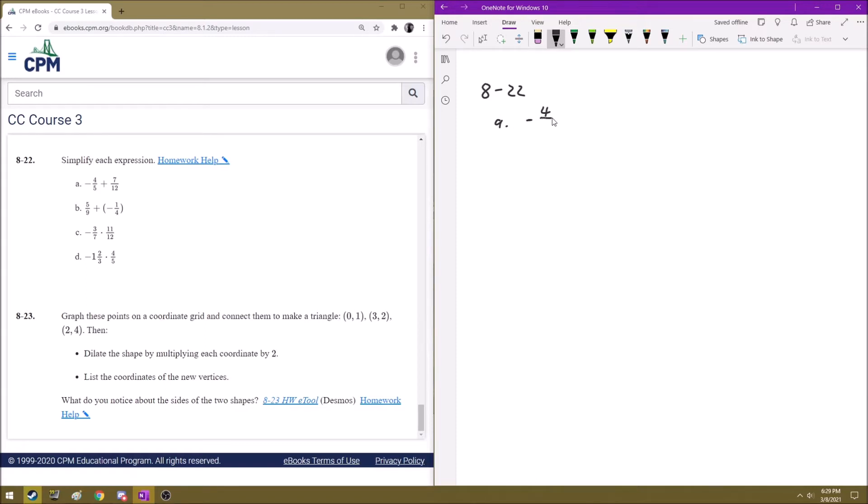So we have negative 4 over 5, or 4 fifths, plus 7 over 12, or 7 twelfths. So to add fractions like this, we just want to get the denominators the same. So then we can just add them.